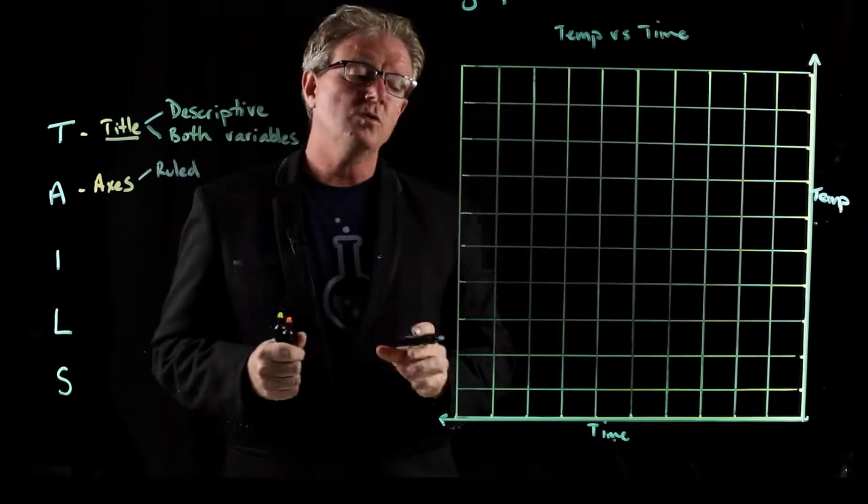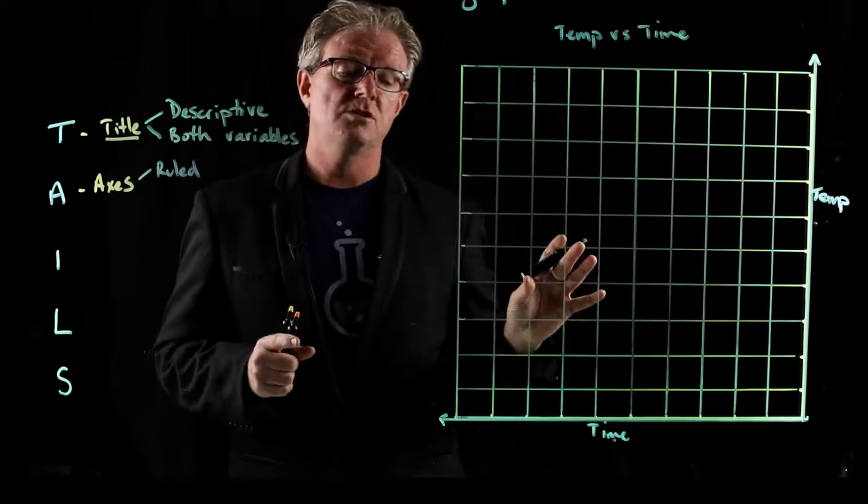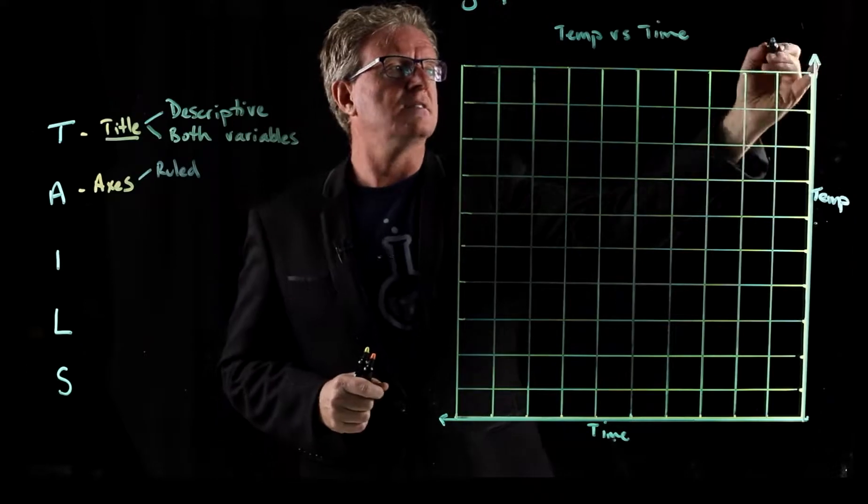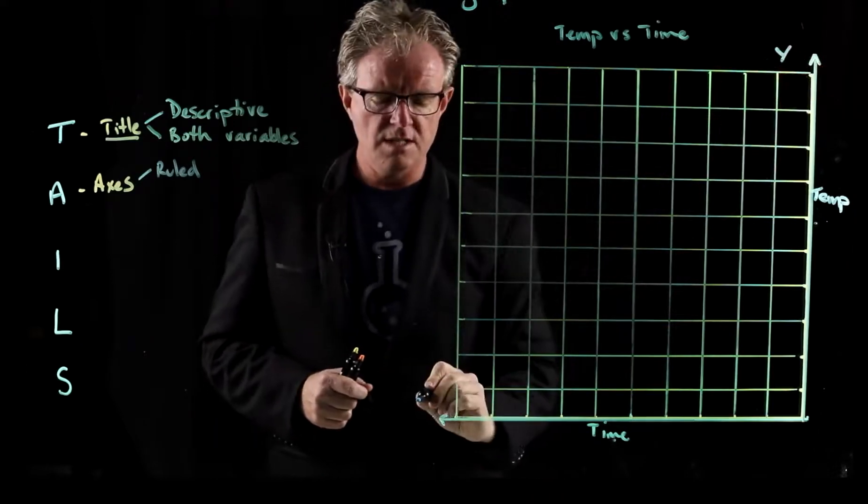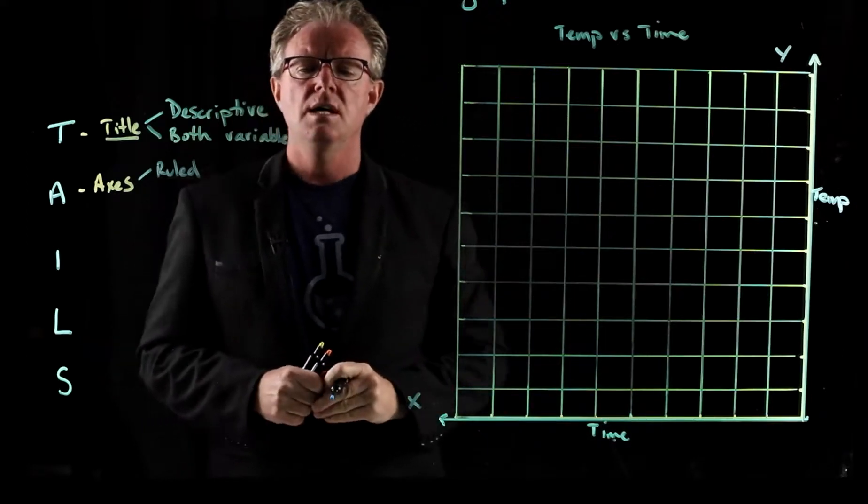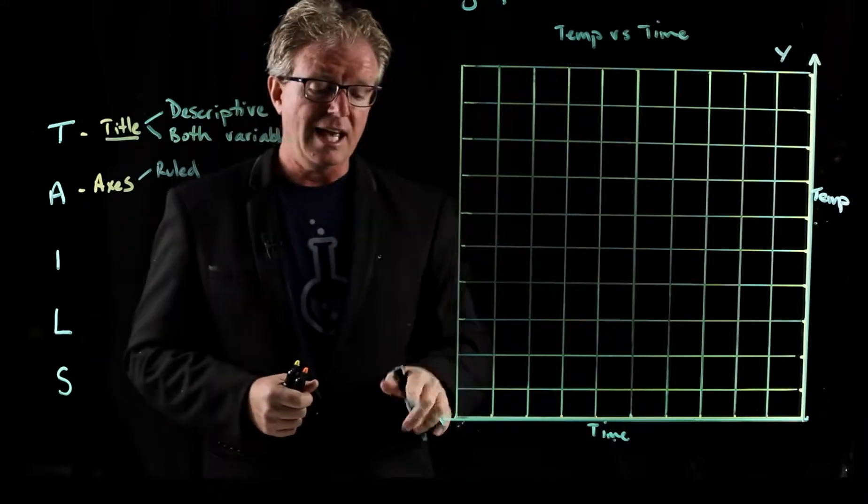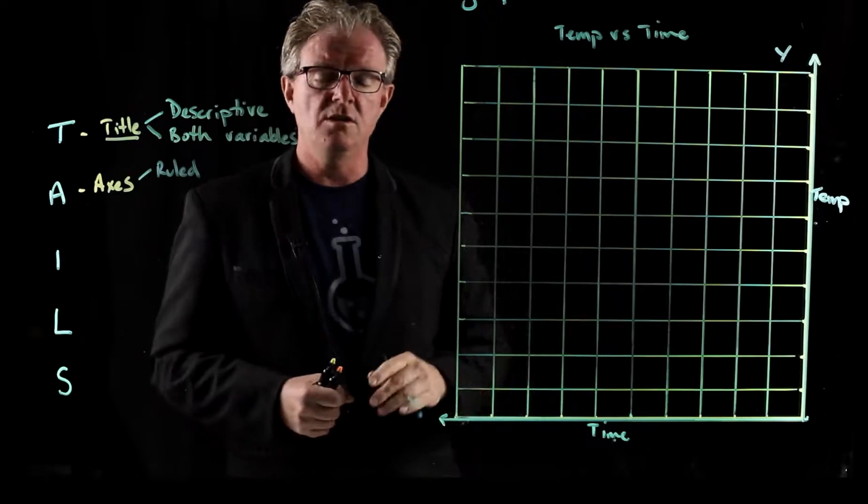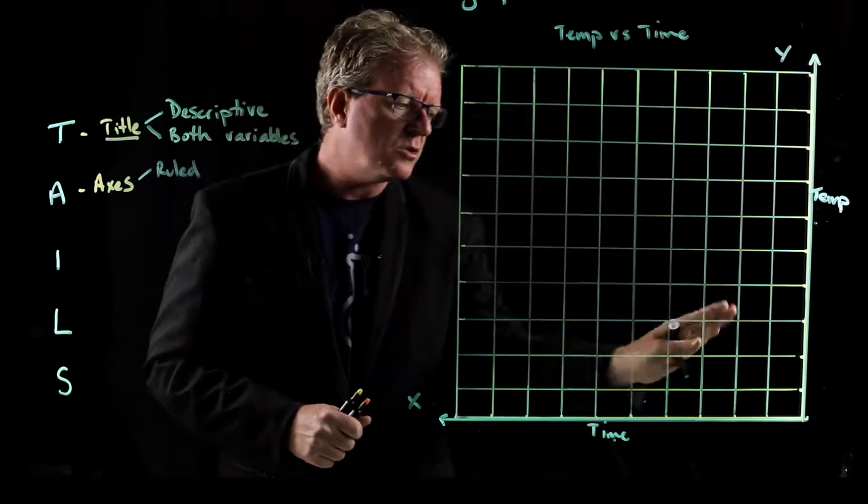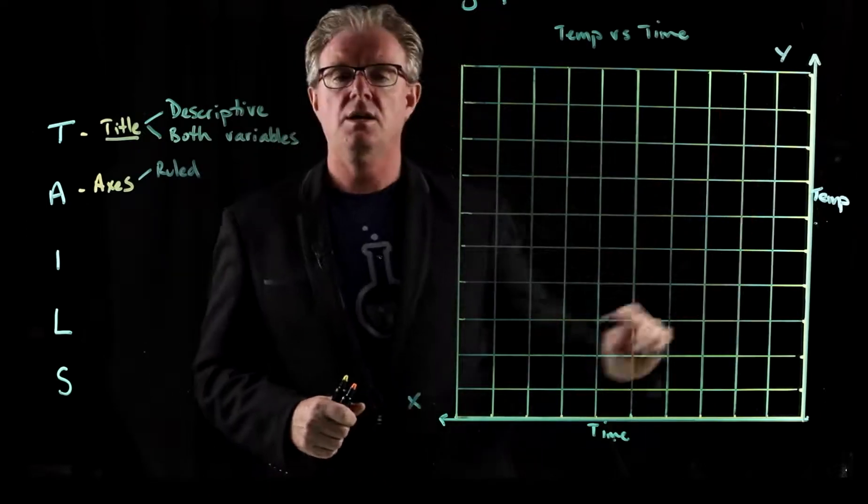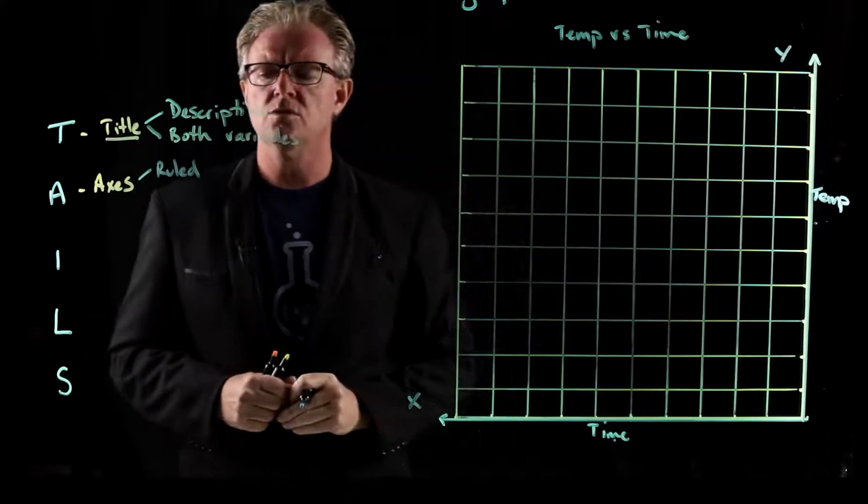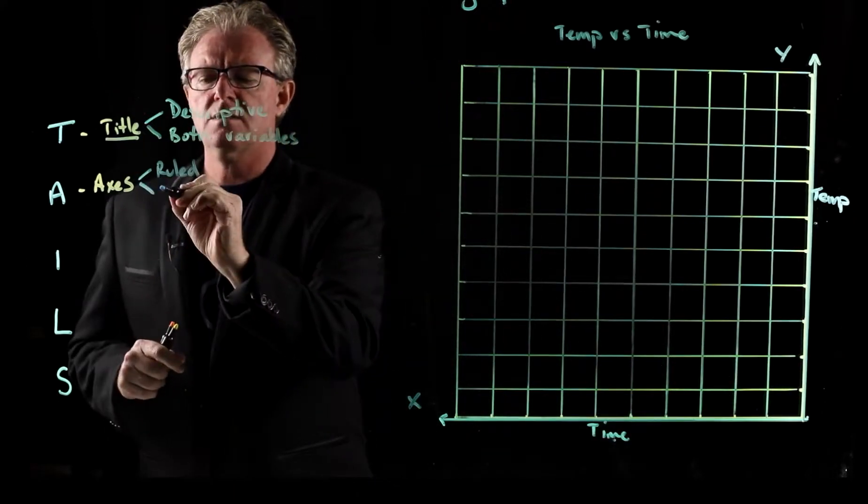With the axes, you also need to ensure that you've got the right variables on the right side. So this is called the y-axis up here. And this is the x-axis. So y goes up, x goes across. Some people like to think that x comes before y in the alphabet and you crawl before you walk. So you're crawling along the bottom before you stand up and you walk. But y is always vertical, x is horizontal. So we have our x and y axes.